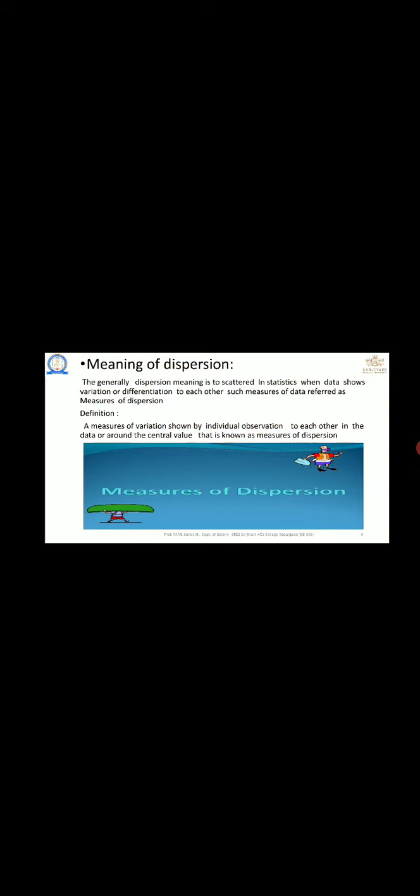In the figure we can see measures of dispersion simply. In the figure, the boat is on the head — that is known as the central distribution — and on the upper side a man is going outside of the data, which is known as measures of dispersion. Measures of dispersion are of four types: range, mean deviation, variance, and standard deviation.